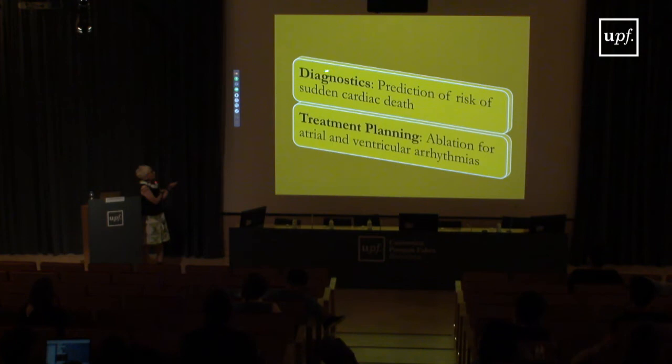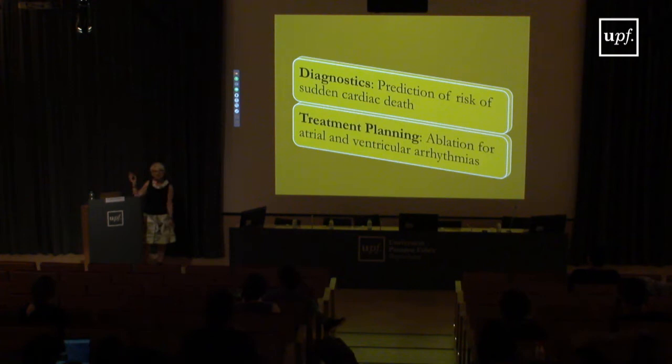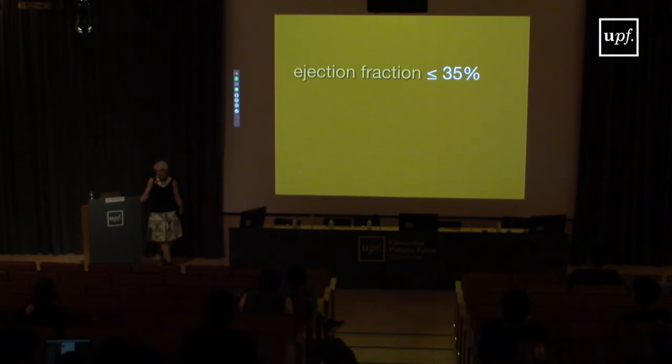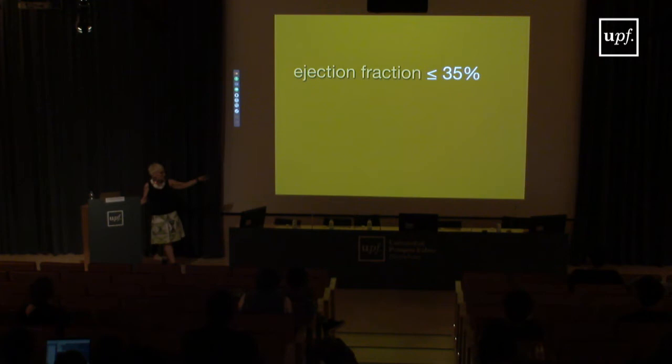With these patient models we work in two directions: diagnostics — specifically predicting risk of sudden cardiac death — and individualized treatment planning for ablation of atrial and ventricular arrhythmias. Currently, the decision to implant a primary-prevention defibrillator in a patient with prior infarction is based solely on one clinical parameter: ejection fraction less than 35 percent, evaluated by ultrasound.